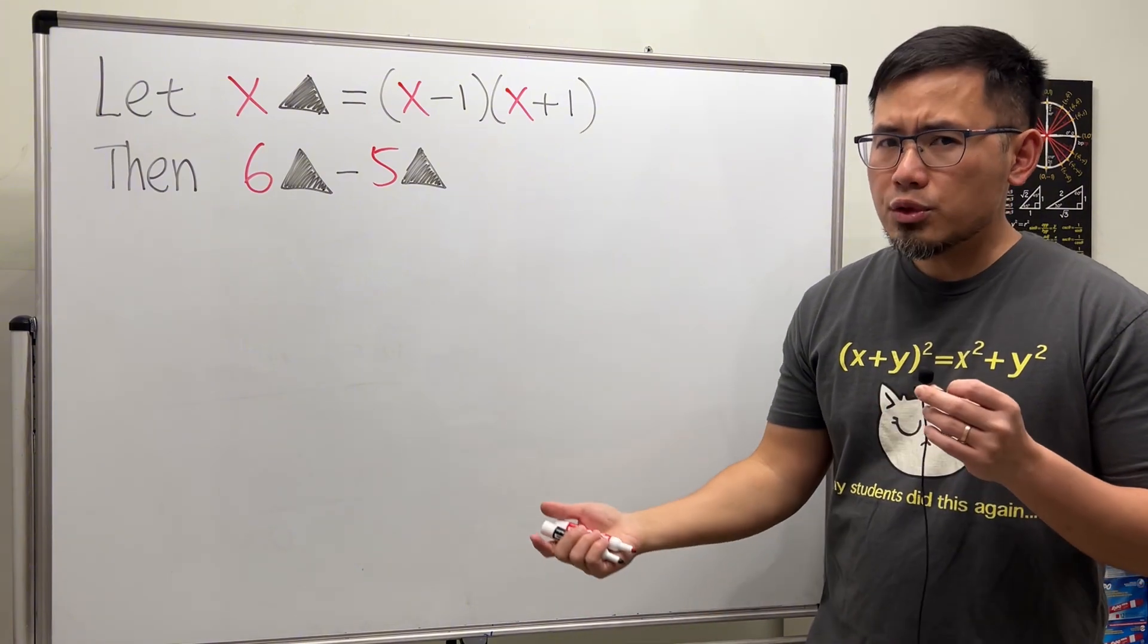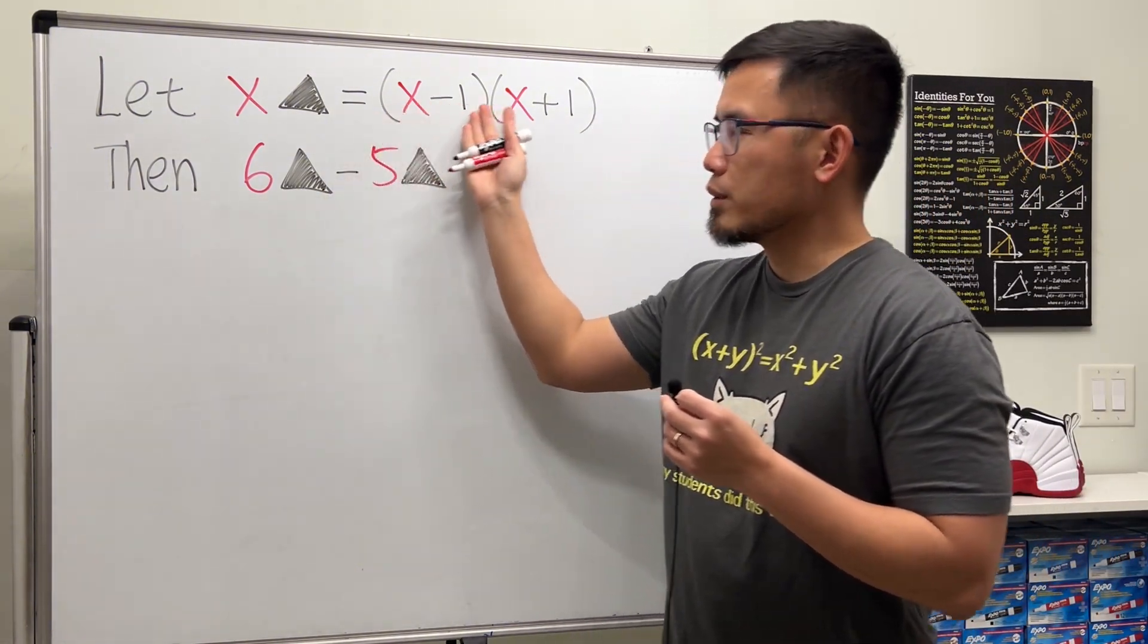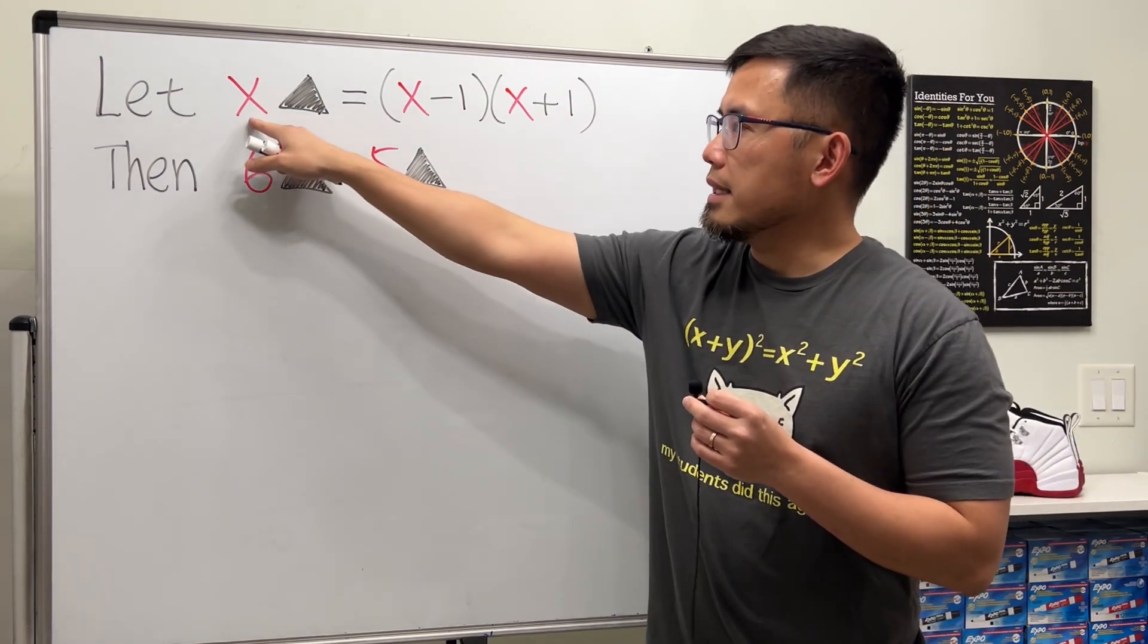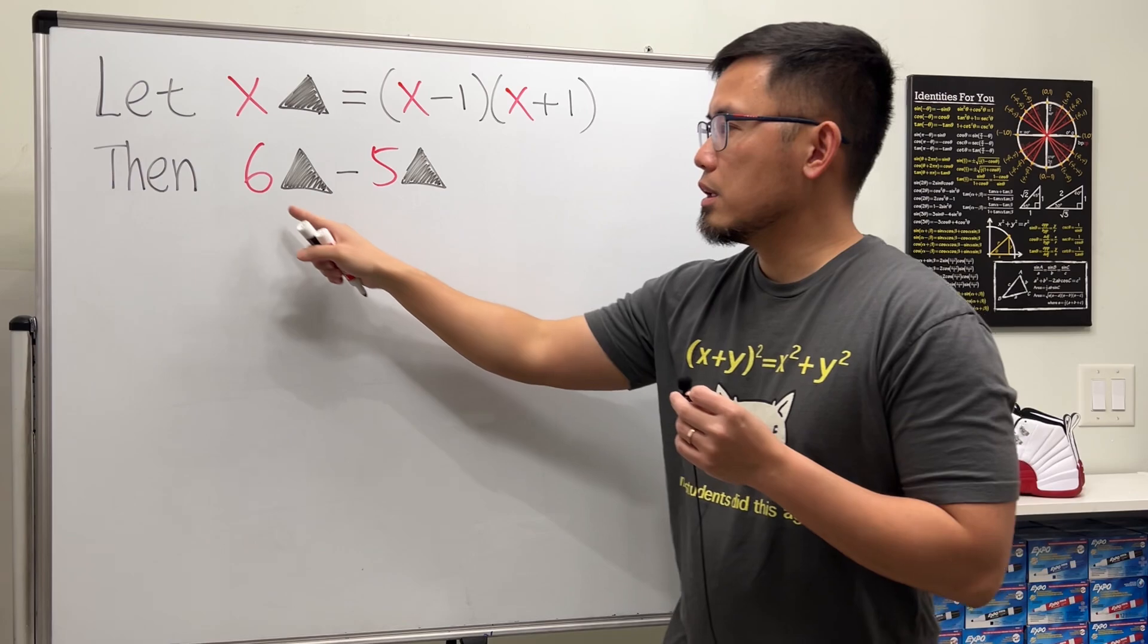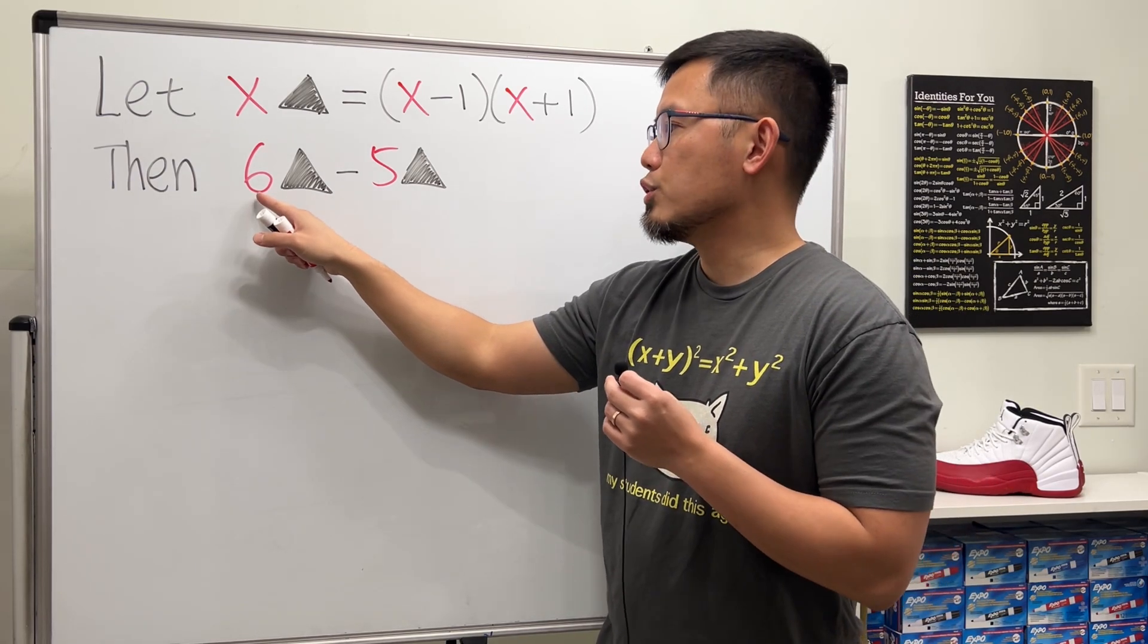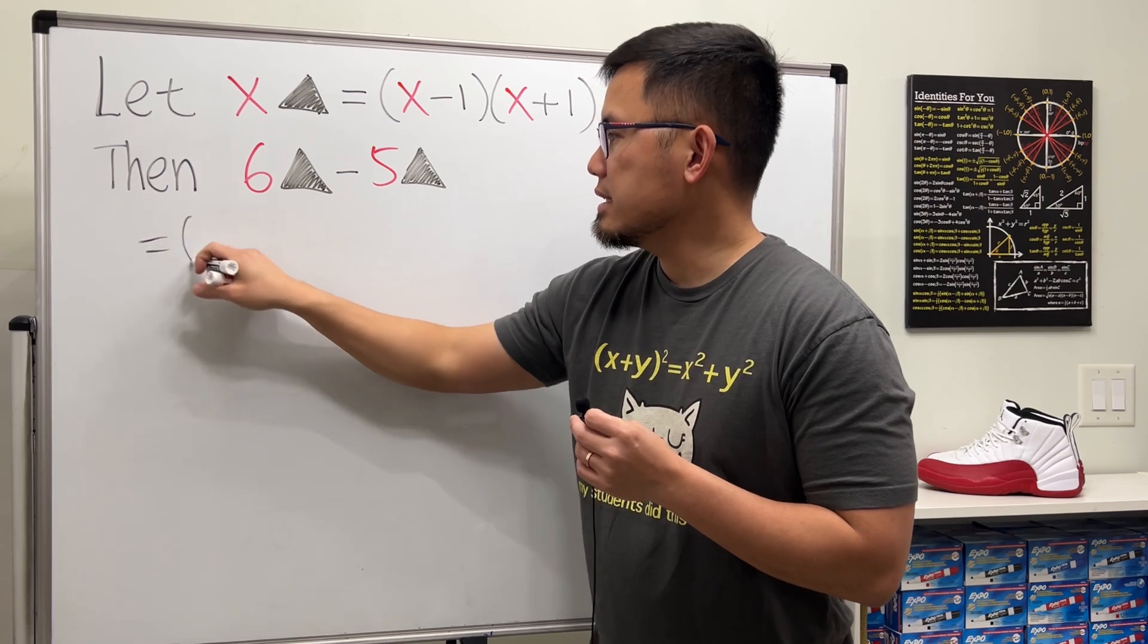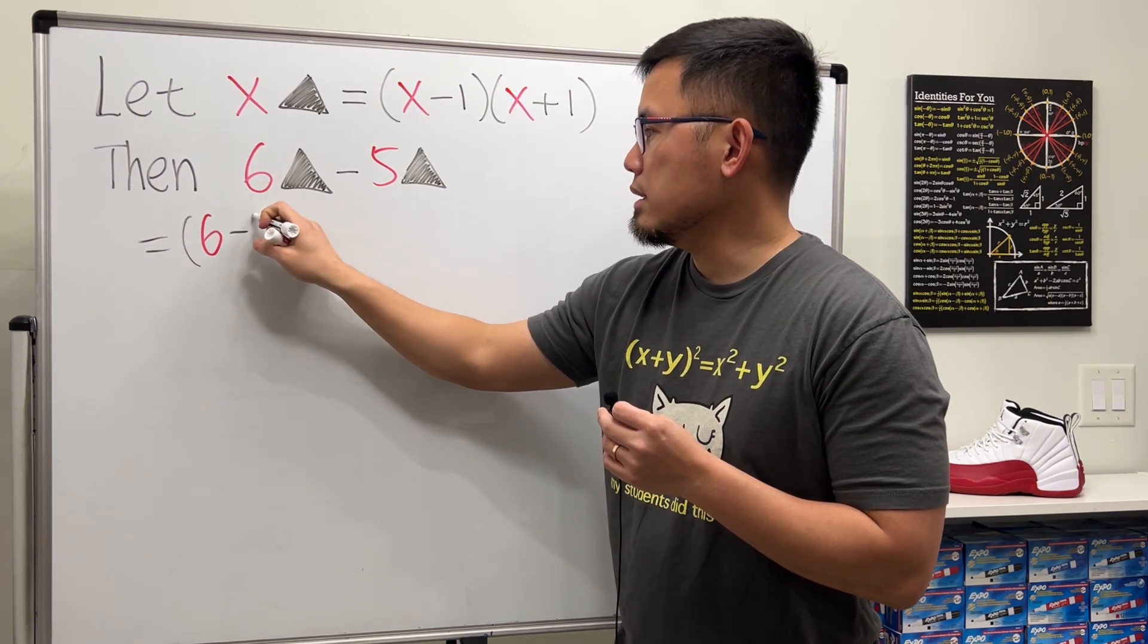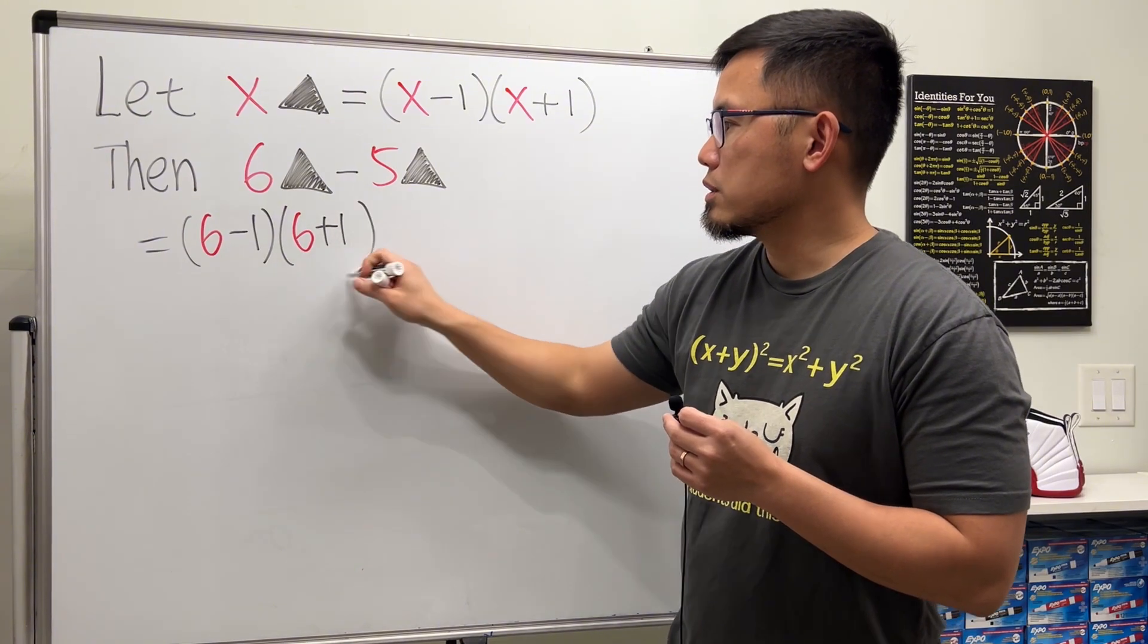Let's go ahead and compute it. 6 triangle - we just have to follow this definition. If you have 6, you put 6 into all the x's, so we get 6 minus 1 times 6 plus 1.